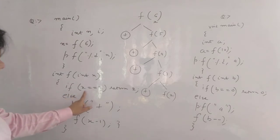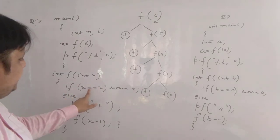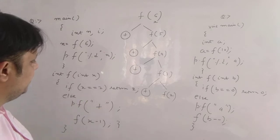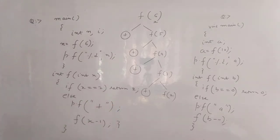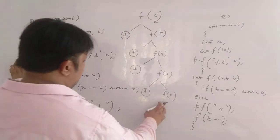So this becomes what? x == 2. So means 2 == 2, condition true. So it returns what? It returns 2.